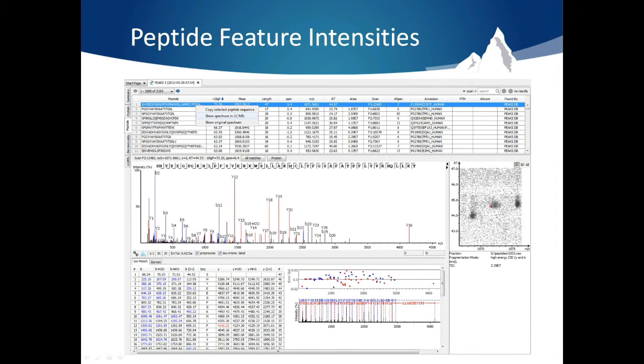If you'd like to validate the link between identified peptides and peptide features it's quite easy to do. Right click on a peptide in the peptide table and select show spectrum in LC-MS.